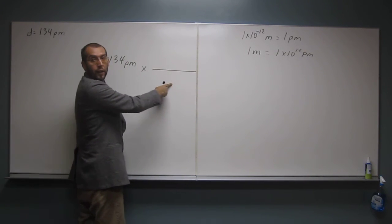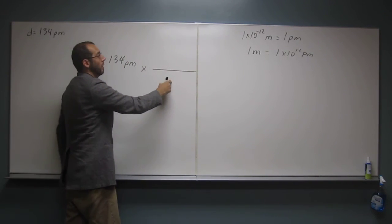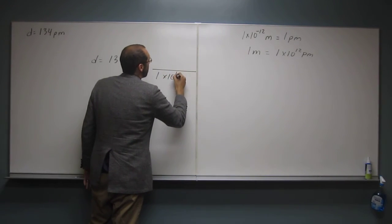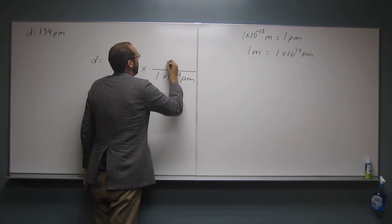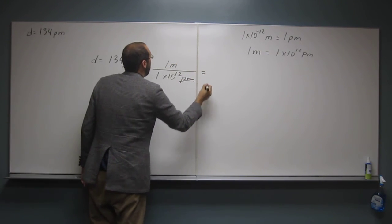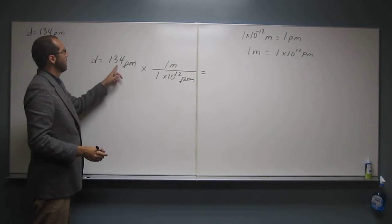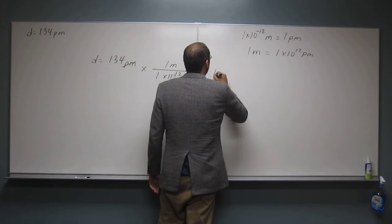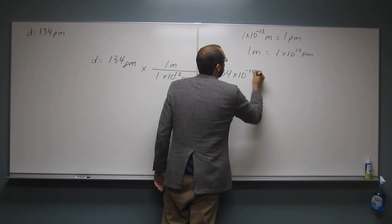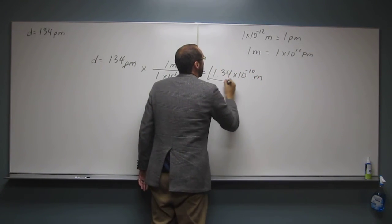All right, so what do we do? We're going to cancel out picometers and get meters. So we're going to put picometers on the bottom. So 1 times 10 to the 12th, 1 meter. Cancel, cancel. And when we do that, we're just going to move that 2 and then to the negative 10. So 1.34 times 10 to the negative 10 meters.